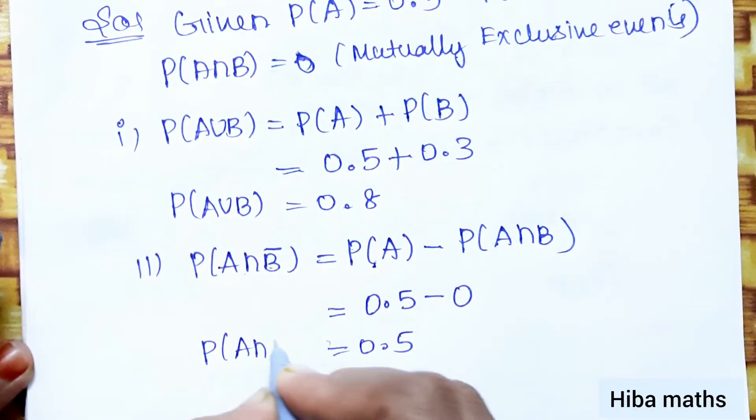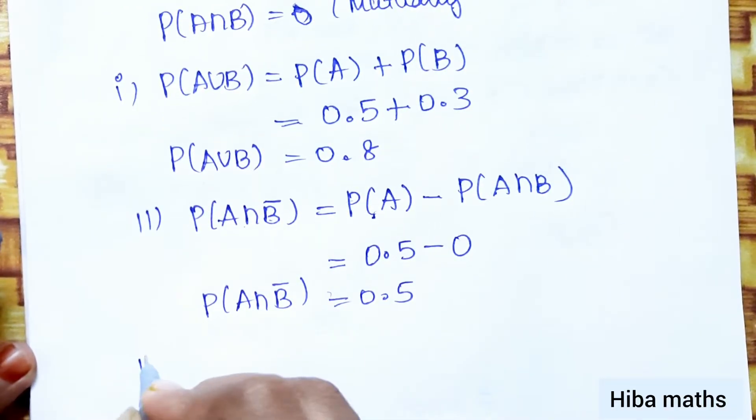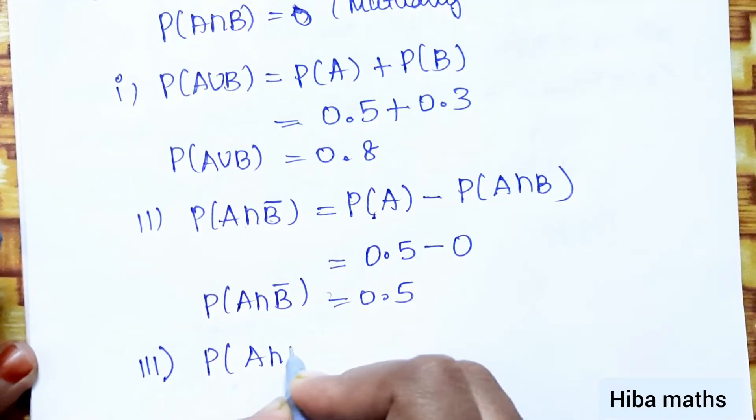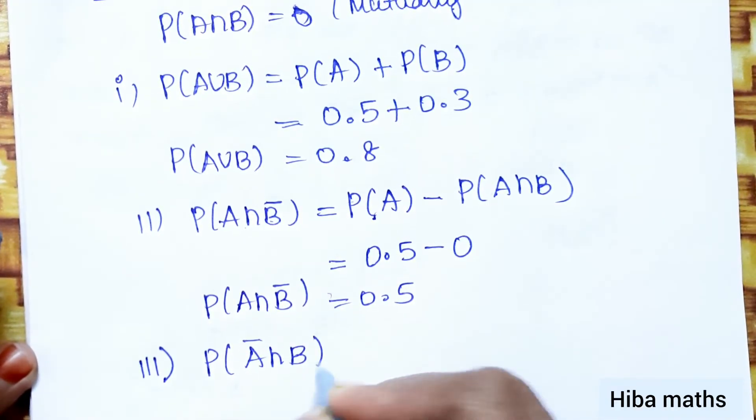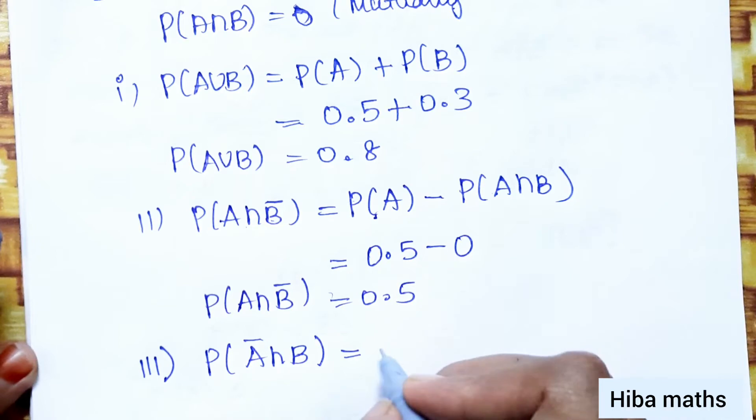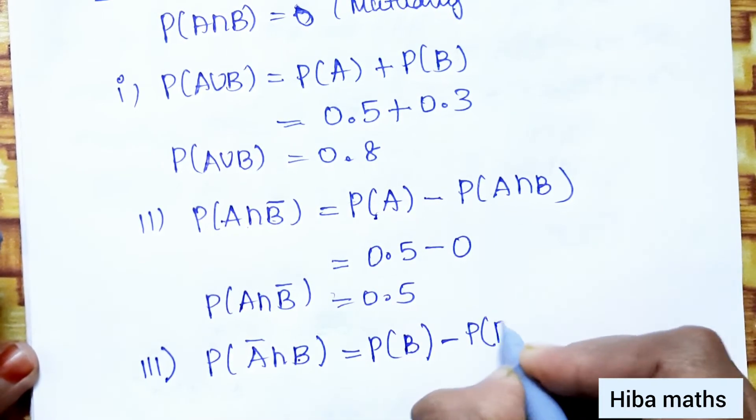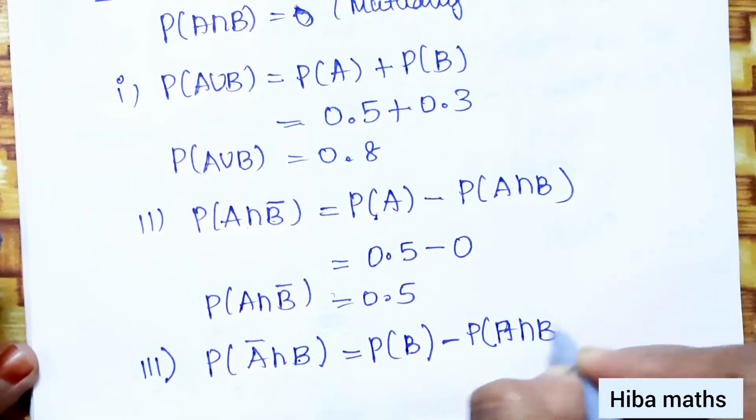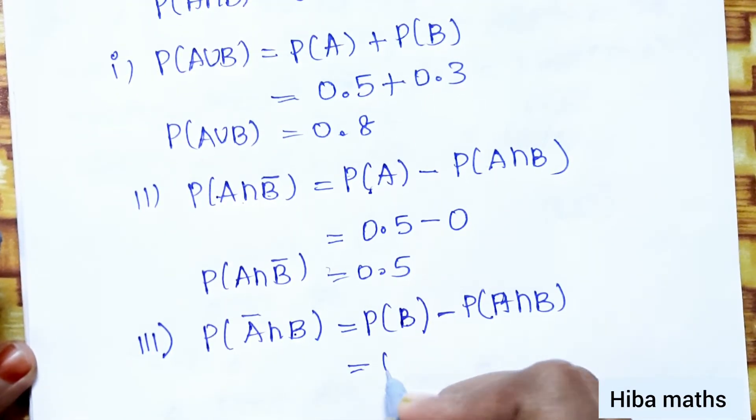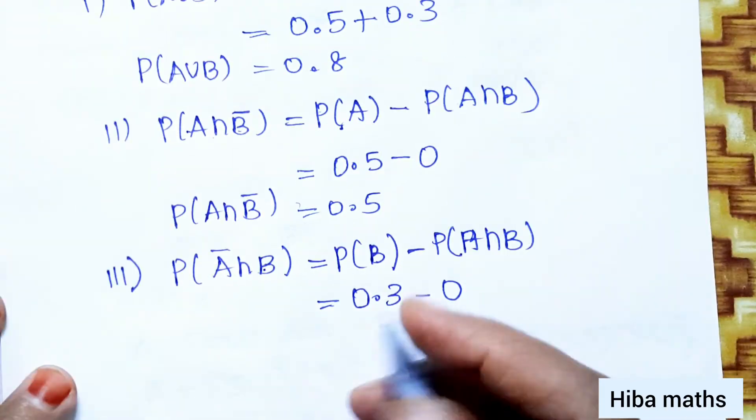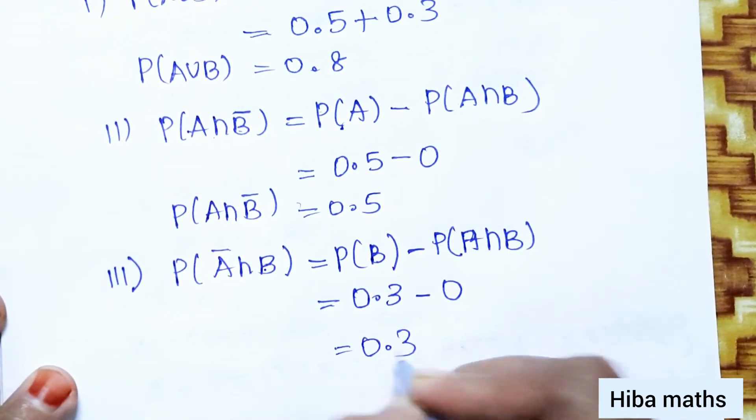P(A∩B̄). Third subdivision, P(Ā∩B). P(B) minus P(A∩B). P(B) is 0.3 minus P(A∩B) value is 0, so final answer is 0.3.